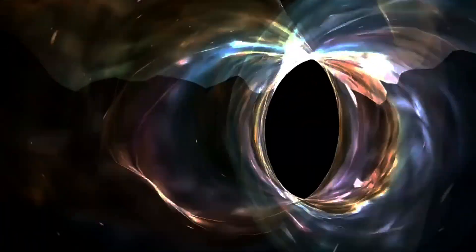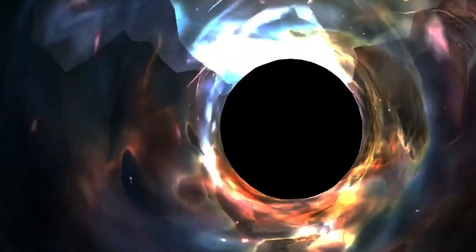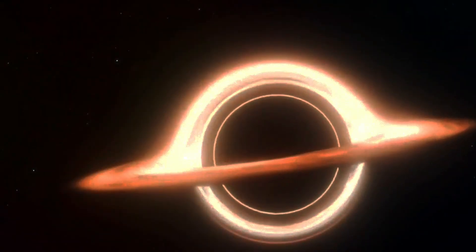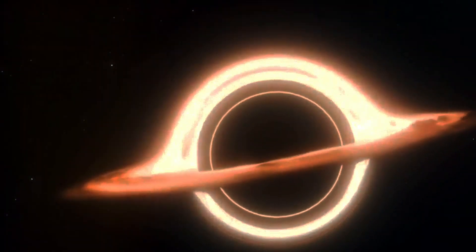At the center of a black hole lies the singularity where matter is thought to be infinitely dense and gravity is infinitely strong. The known laws of physics break down at this point. Surrounding the singularity is the event horizon, the point of no return. Once crossed, nothing can escape the black hole's gravitational pull, not even light.